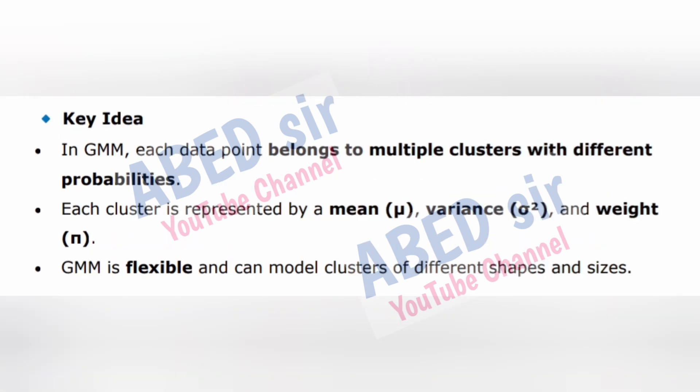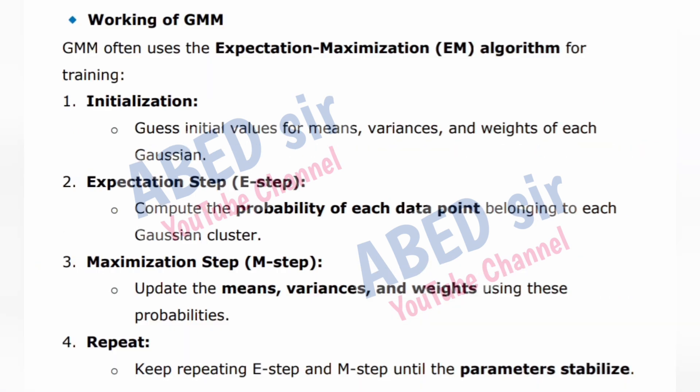Key idea: In GMM, each data point belongs to multiple clusters with different probabilities. Each cluster is represented by a mean (μ), variance (σ²), and weight (π). GMM is flexible and can model clusters of different shapes and sizes. GMM often uses the Expectation Maximization (EM) algorithm for training.